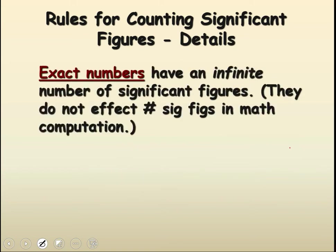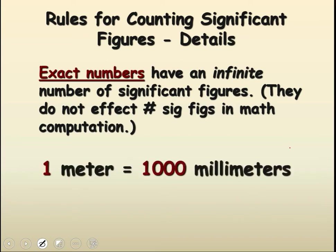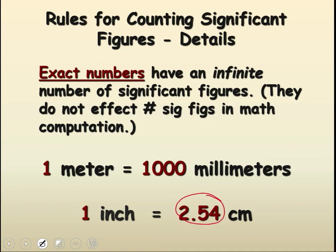Sometimes we're going to have exact numbers. Exact numbers, for the case of calculations, will have an infinite number of sig figs — every single digit is significant. So 1,000 milliliters in a liter is an exact, defined value. Similarly, 2.54 centimeters in an inch — your book and the handouts we use treat that as an unlimited number of sig figs, as a defined value.